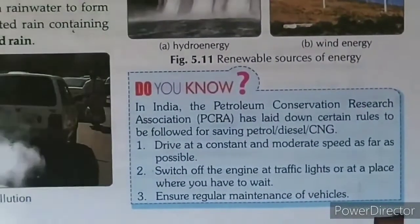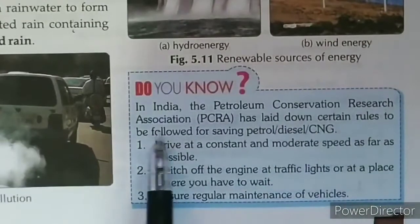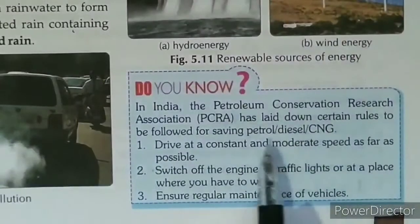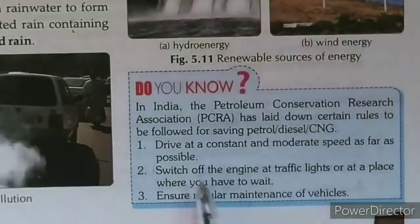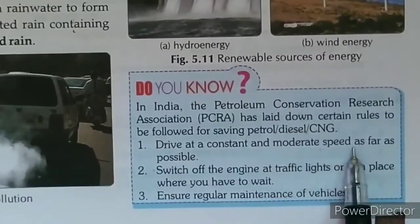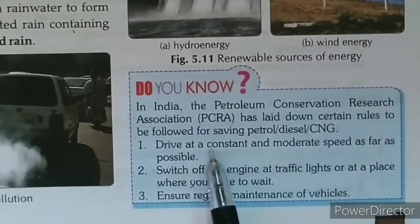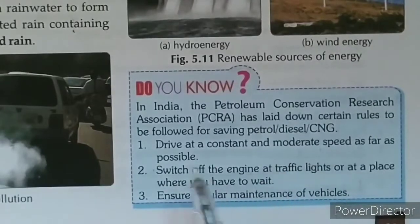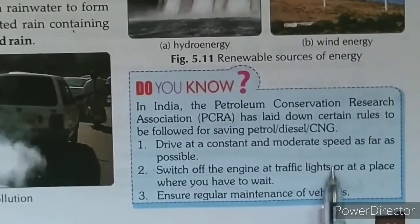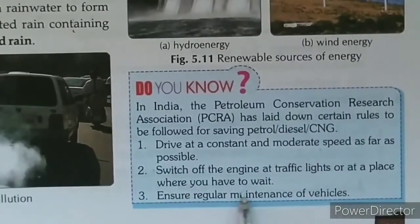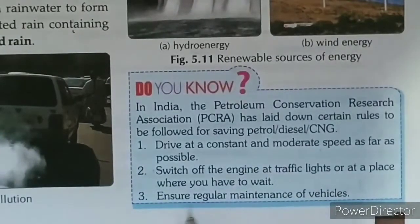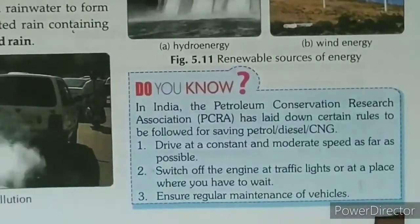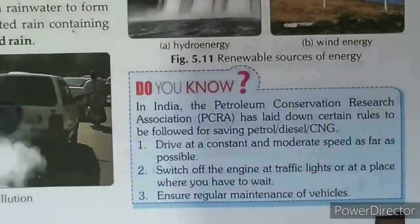Do you know — in India, the Petroleum Conservation Research Association (PCRA) has laid down certain rules to be followed for saving petrol, diesel, and CNG. Rules include: drive at a constant and moderate speed as far as possible — ना बहुत धीरे, ना बहुत तेज़। Switch off the engine at traffic lights or wherever you have to wait. Ensure regular maintenance of vehicles — time to time service करवाएं।